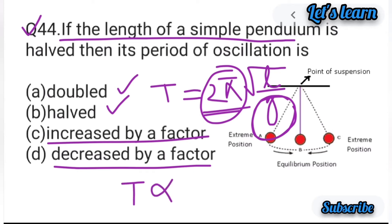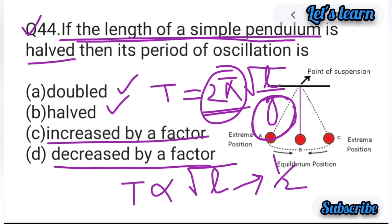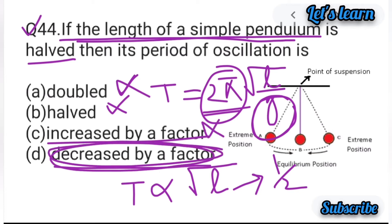2π is constant और किसी एक निश्चित जगह के लिए g भी constant होता है। इसलिए T ∝ √L — मतलब length बढ़ेगा तो time period भी बढ़ेगा, length घटेगा तो time period भी घटेगा। यहाँ length half हो गई, तो time period भी decrease होगा — half नहीं, double नहीं, बल्कि decrease by a factor (√(1/2) = 1/√2 times)। Square root की वजह से option D correct है।